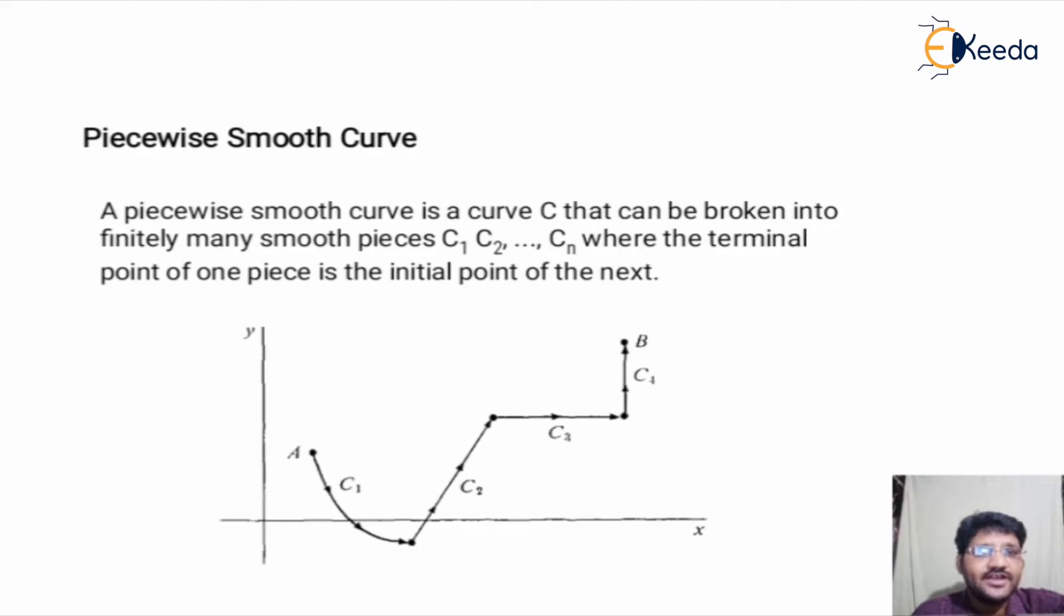In the figure, we can see curve AB is a collection of pieces C1, C2, C3, and C4—that is a set of four pieces. And the terminal point of C1 will work as the initial point for C2.